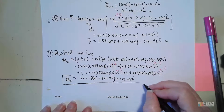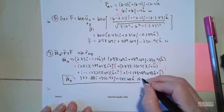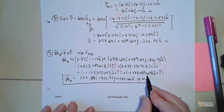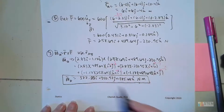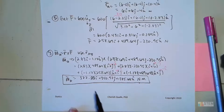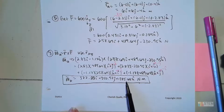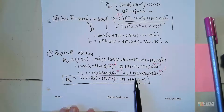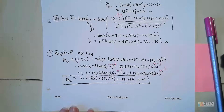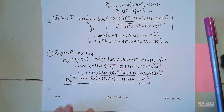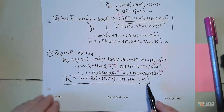The units are newtons times meters, so newton-meters. This I-component is the moment about the x-axis, J is the moment about Y, and K is the moment about Z. You can tell there's a lot more moment about the z-axis compared to the other two. The positive signs mean they're all rotating counterclockwise relative to those axes.